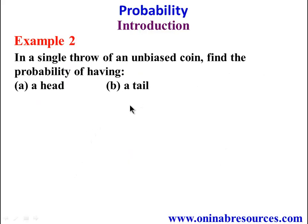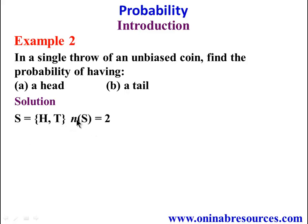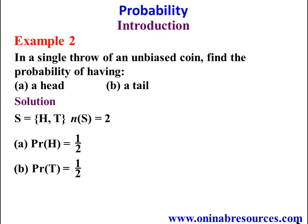Example 2: In a single throw of an unbiased coin, find the probability of A) a head, B) a tail. In our solution, the sample space of a coin is {head, tail}, so n(S) = 2. The probability of getting a head is 1/2, since there is only one H in the sample space. Similarly, the probability of getting a tail is also 1/2, since there is only one tail and the total possibility is 2.